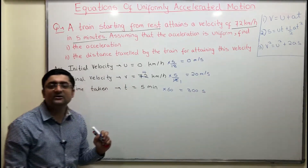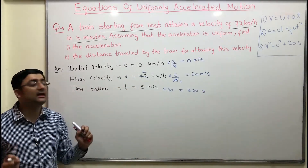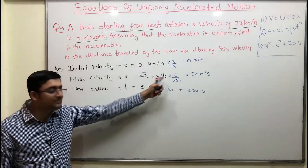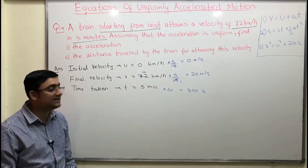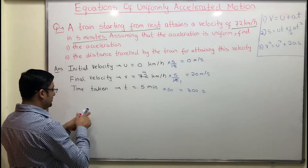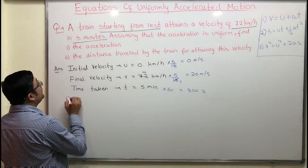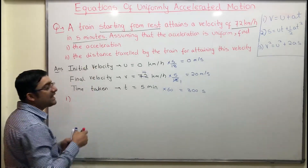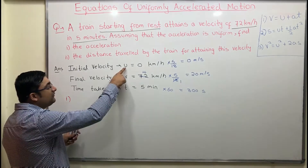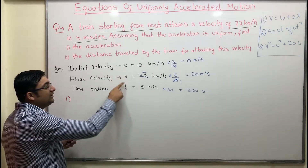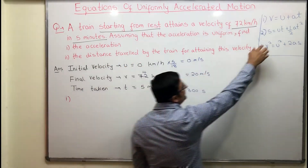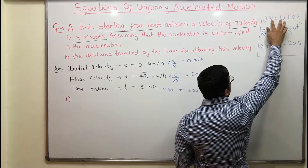The first step while solving numericals is always to get everything in SI units — u and v in meters per second and time in seconds. Now we can calculate whatever we want. Starting with part 1, we have to find the acceleration. What is unknown? Acceleration. What do we have? u, v, and t.